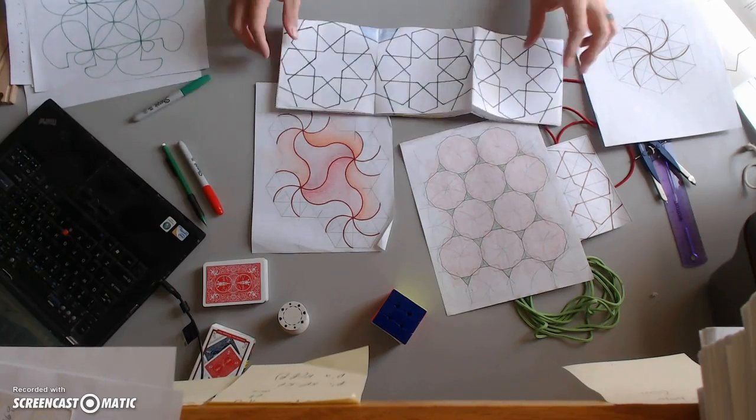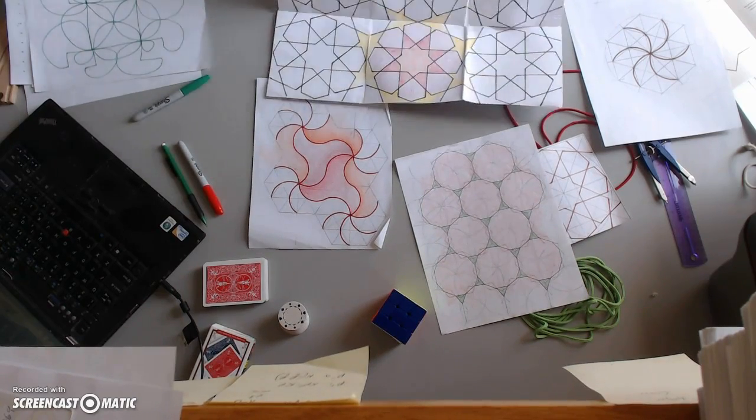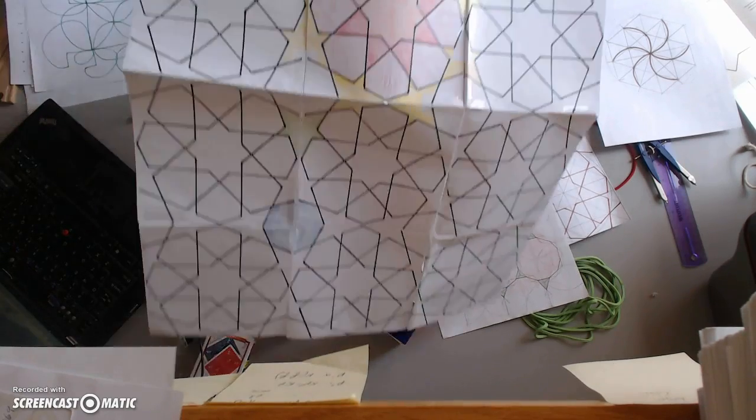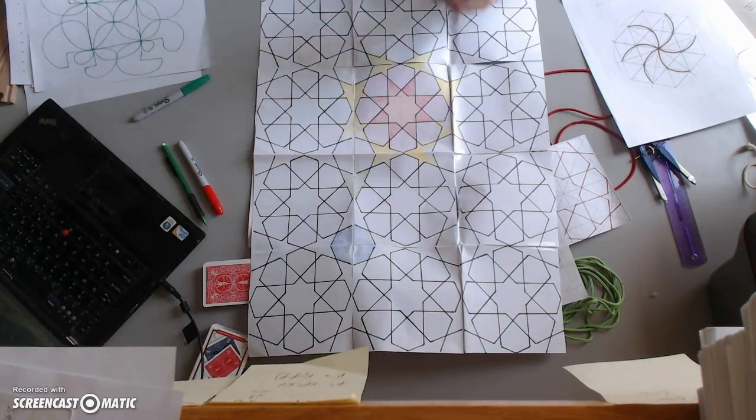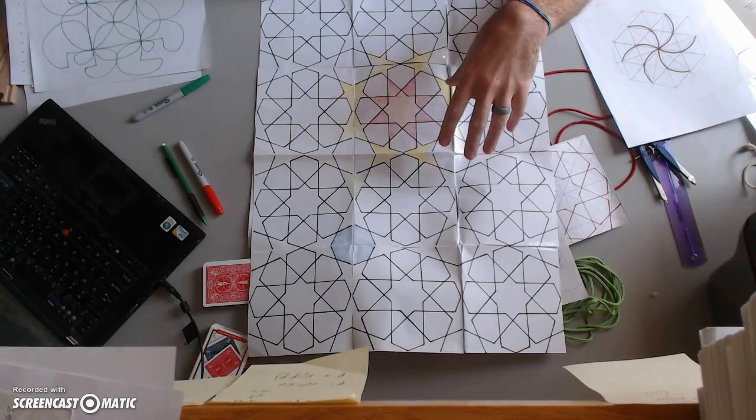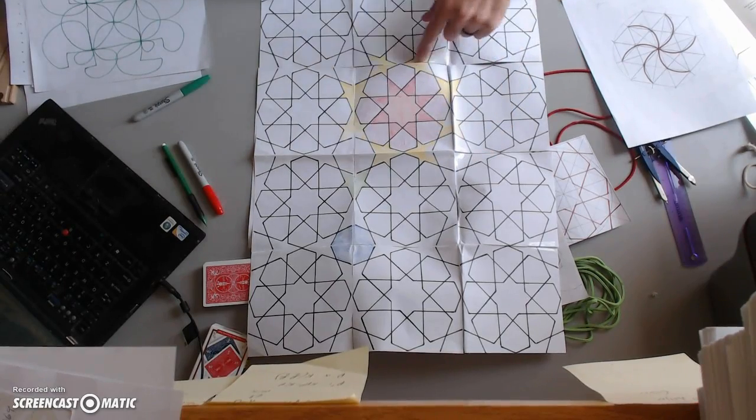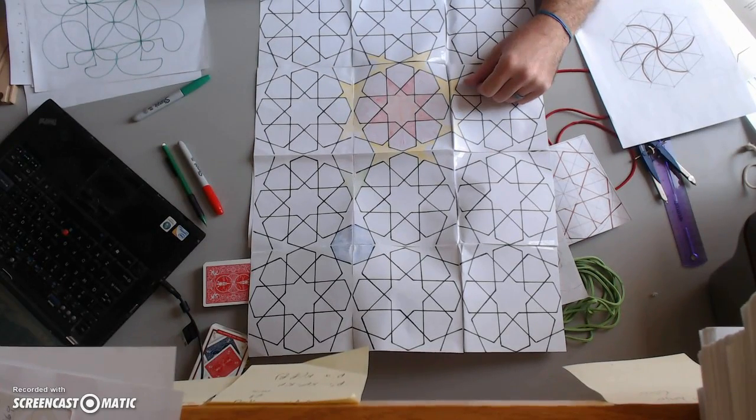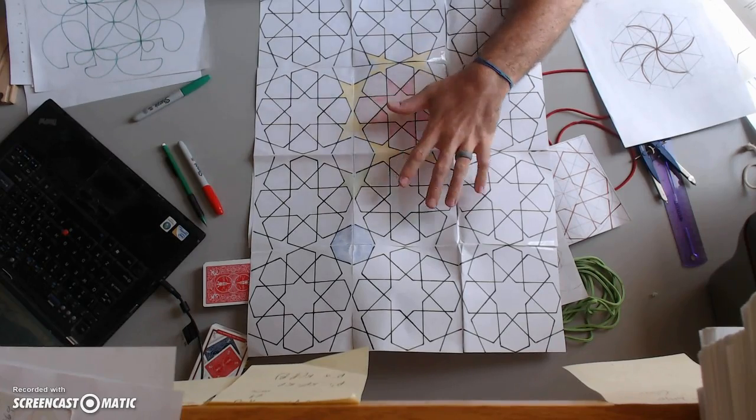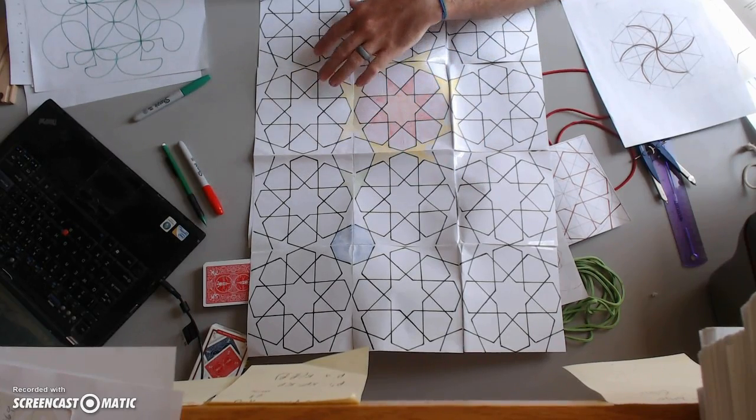Another example, this particular pattern is pretty common. It's clearly made up of squares. You can see how I've taped squares together. But the finished design, the finished pattern, doesn't have any squares in it.